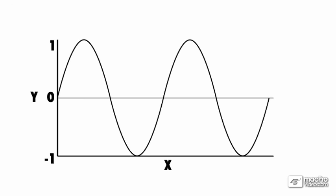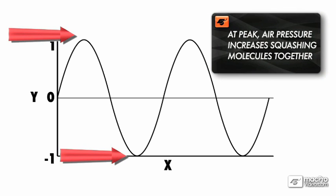The graph also tells us where the wave is strongest and weakest. At its peak, the air pressure is increased and the molecules in the air are squashed together. The opposite is true when the wave hits the low point.